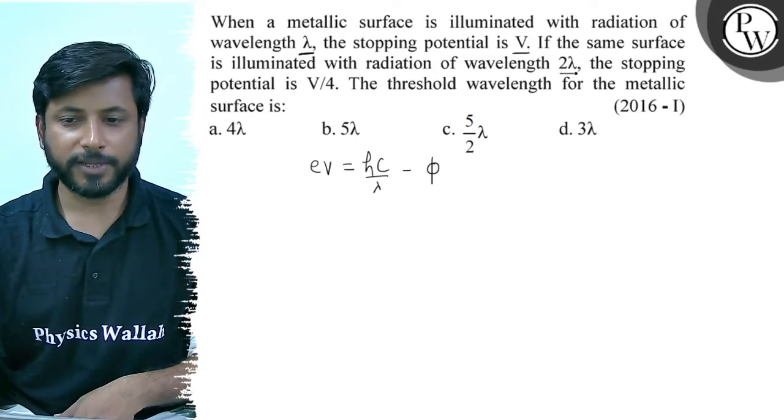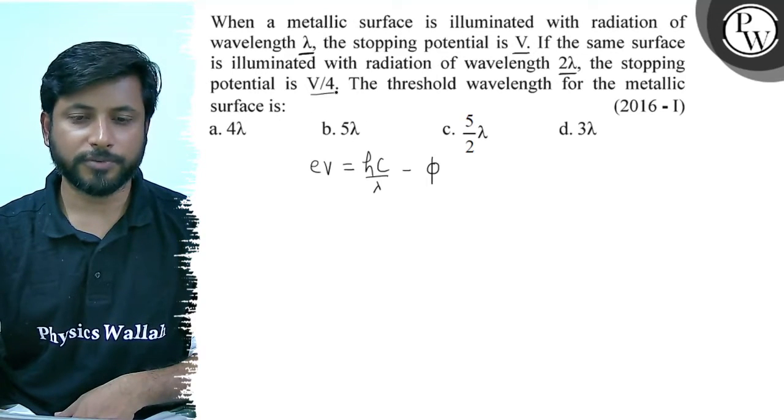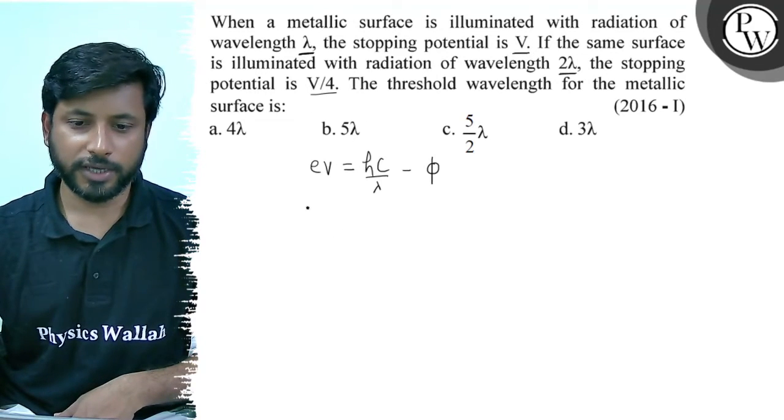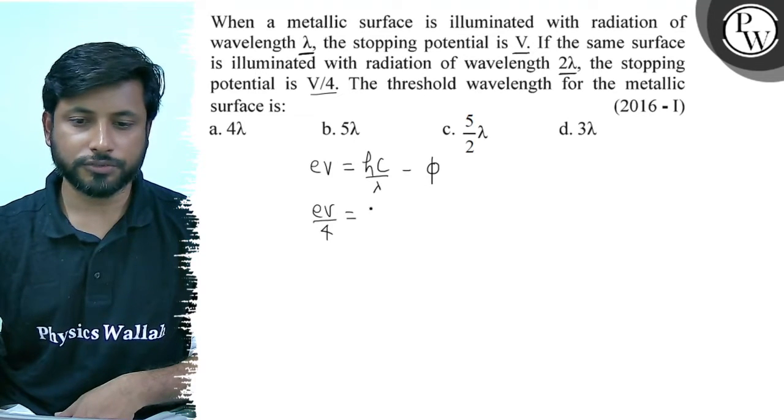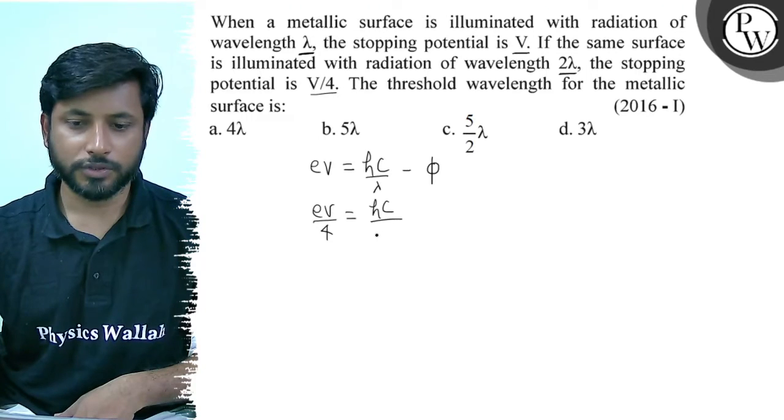In the other case, the wavelength is 2 lambda and stopping potential is V by 4. So this comes from eV by 4 equals to hc by 2 lambda minus phi.